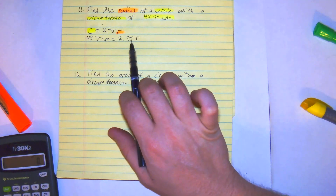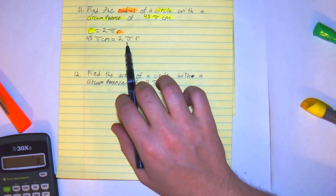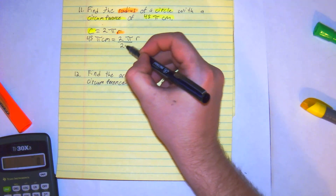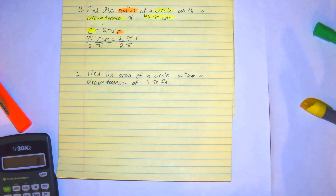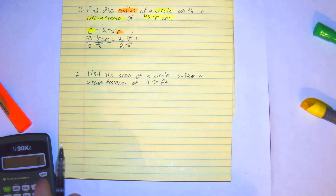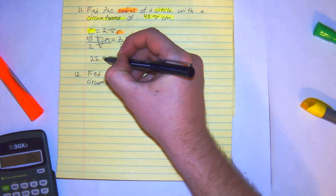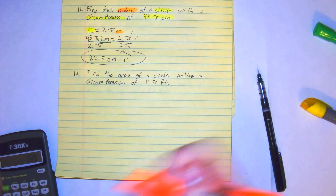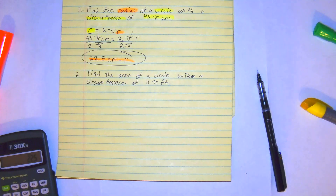We're going to divide both sides by 2 pi all at once, because we want to isolate r. Pi cancels, and you just do 45 divided by 2, and you get 22.5 centimeters equals the radius. And that's exactly what we were looking for. In terms of pi, that's all you have to really do.